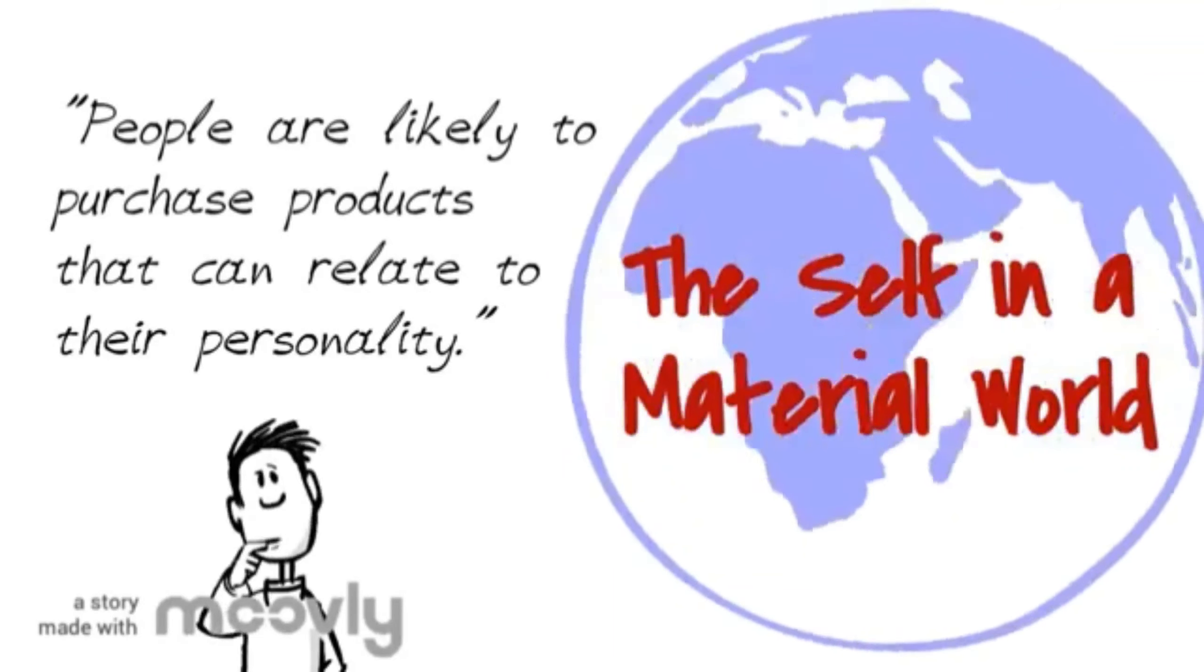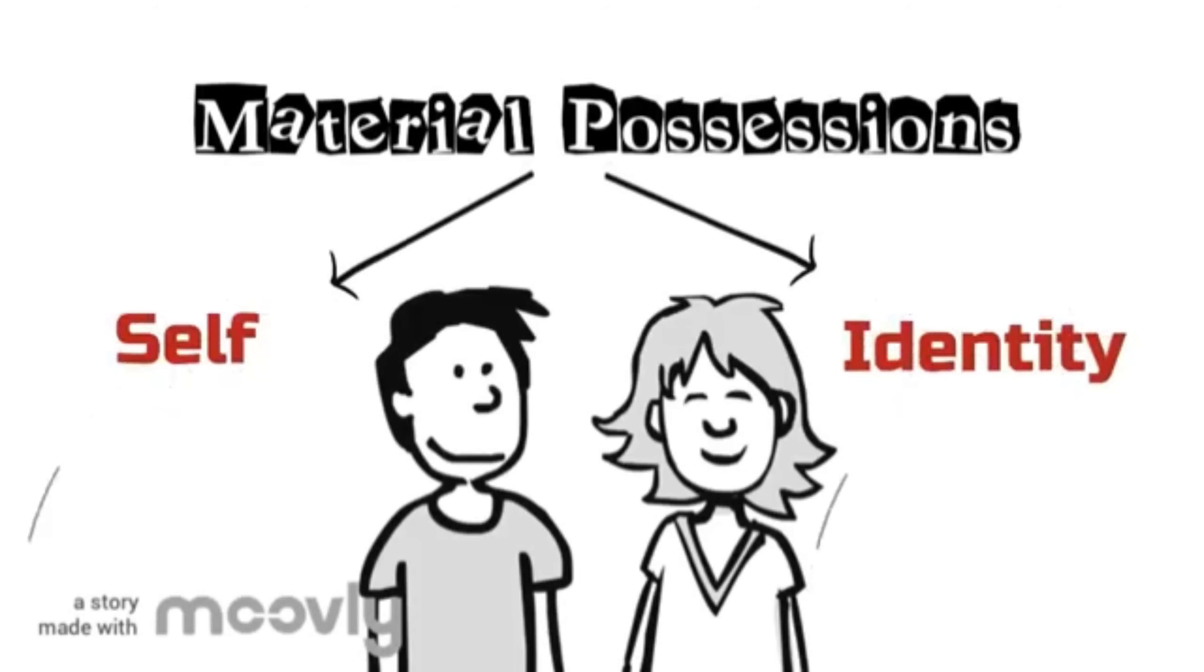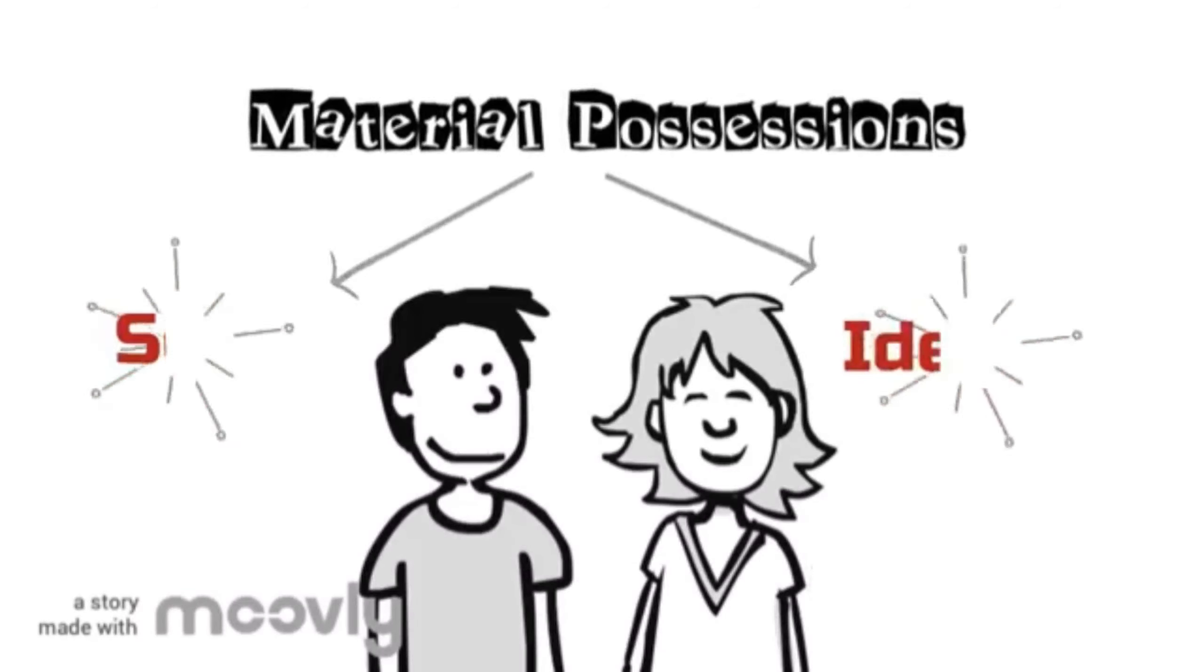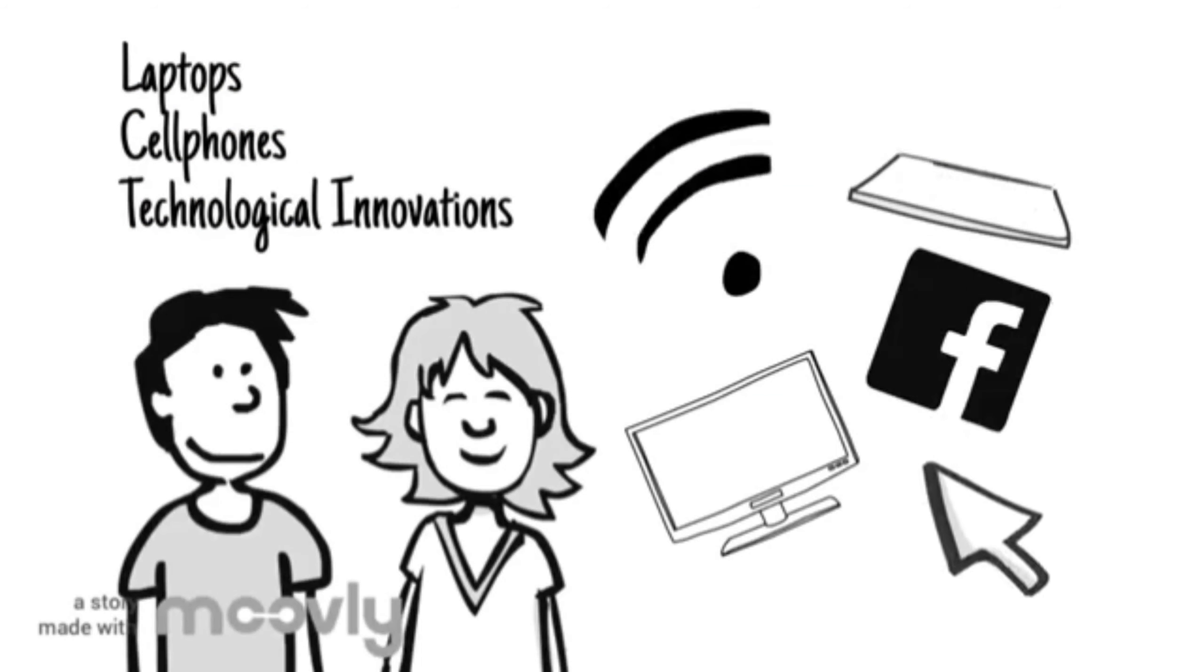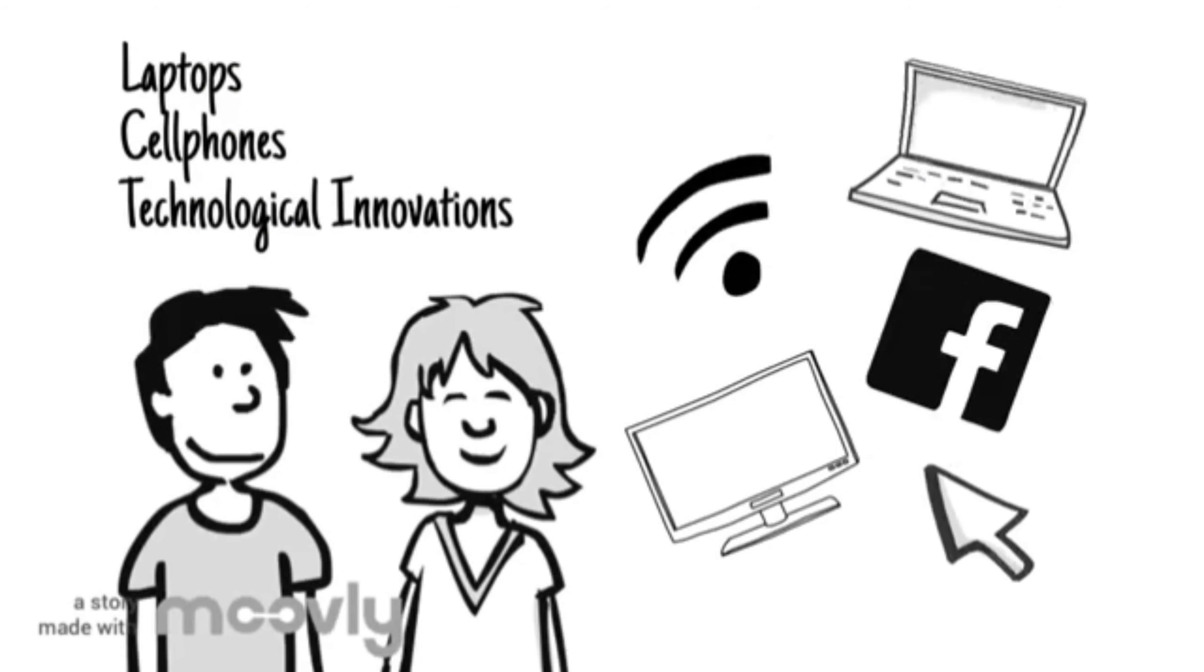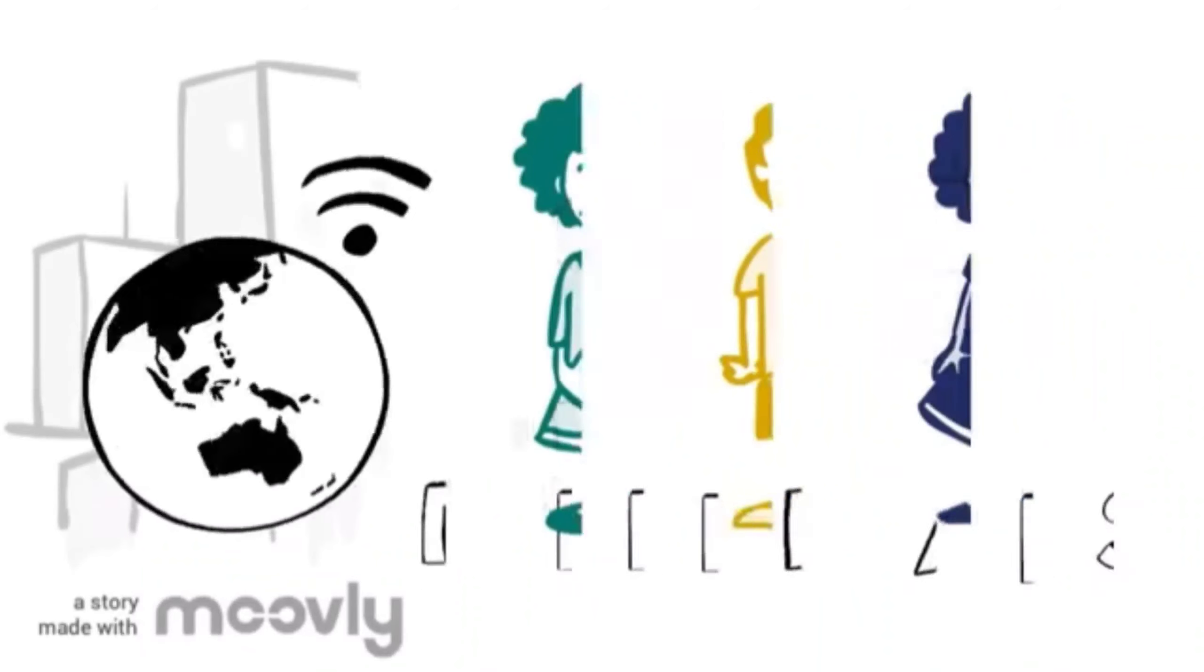People are likely to purchase products that can relate to their personality. Material possessions signify some aspects of one's sense of self and identity. For example, most Millennials have laptops and cell phones and are familiar with different technological innovations because of their inclination to be immersed in the digital, which follows the idea where they are known as digital natives.